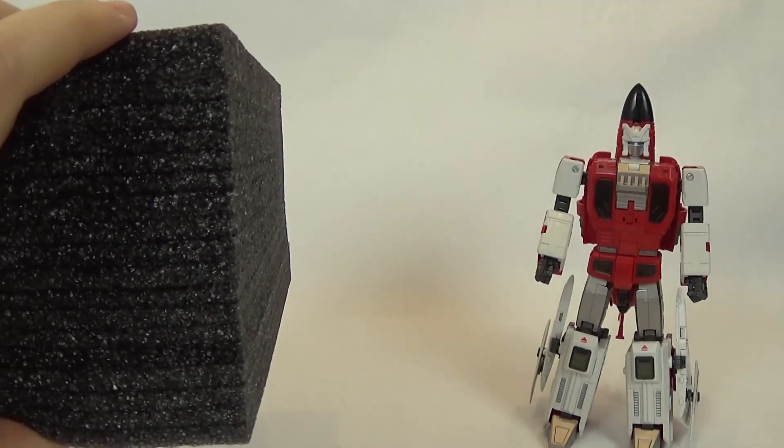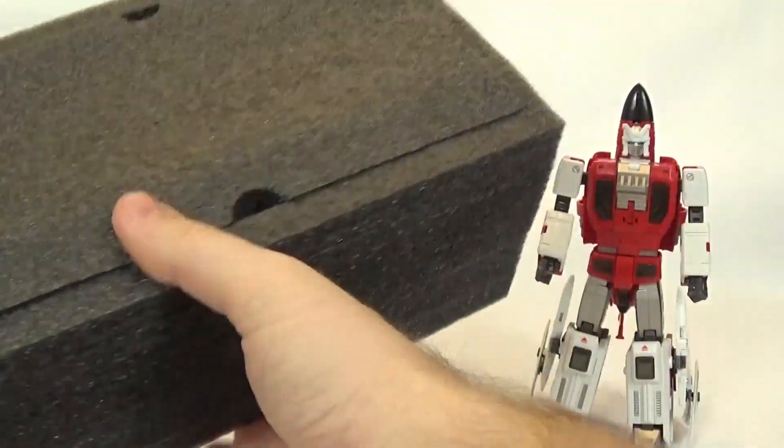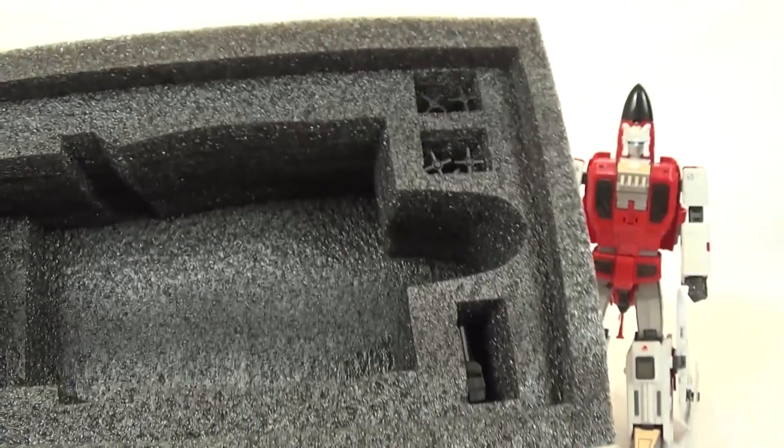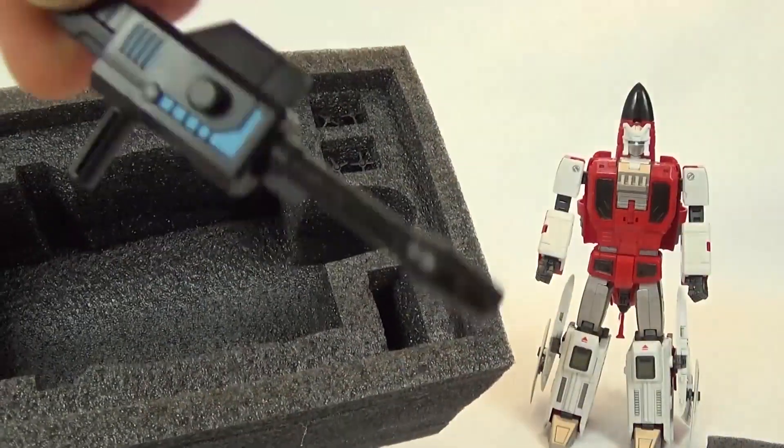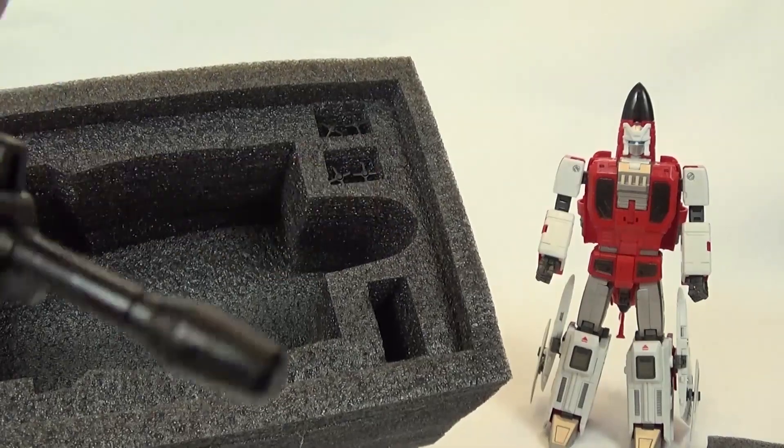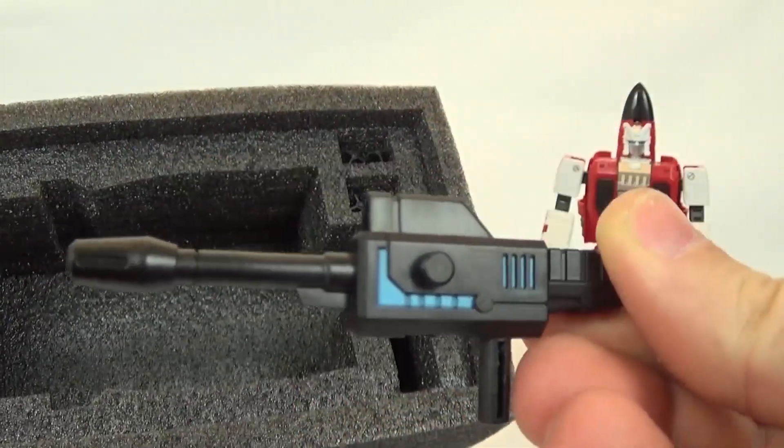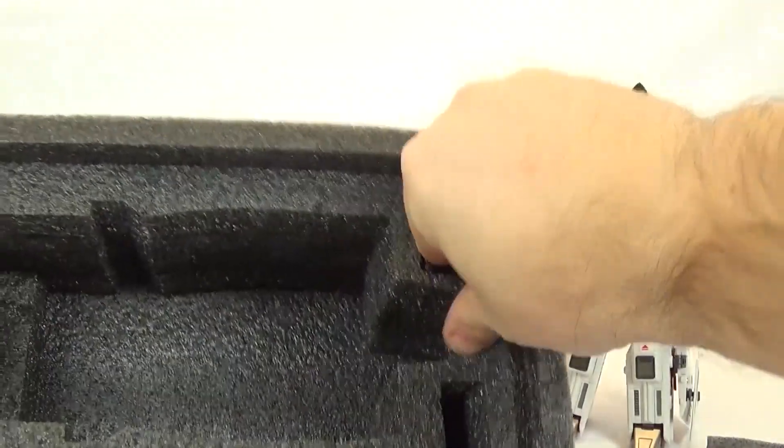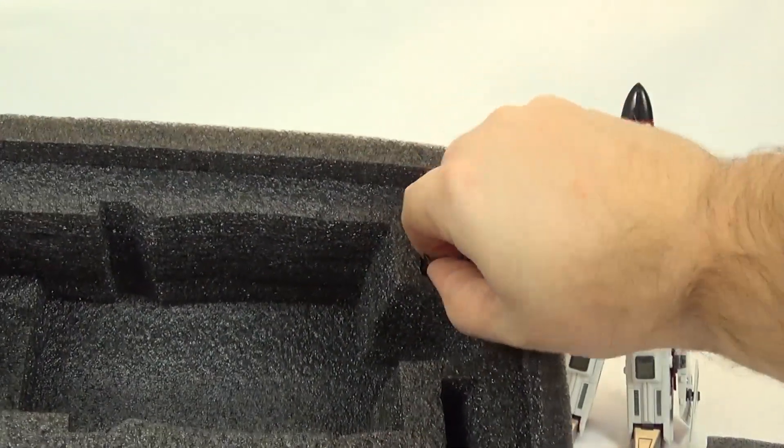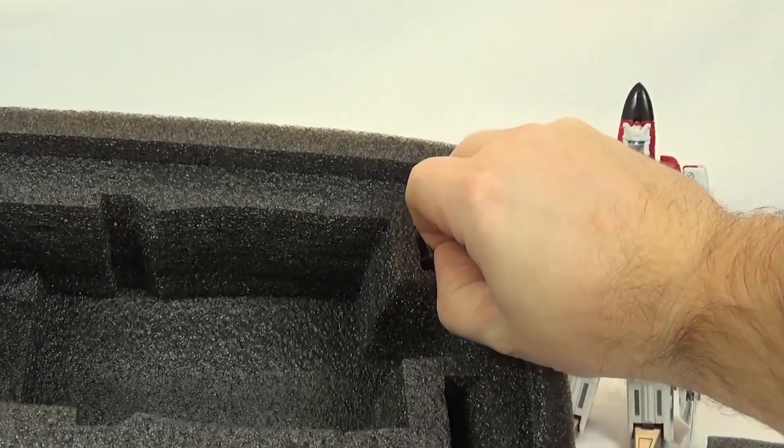Inside, you do get this nice foam insert that the figure comes in, and then you also get his gun, which has some blue paint for accents, which is nice.